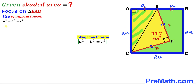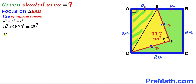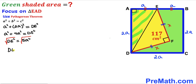Filling in the Pythagorean formula: a squared plus (2a) squared equals DE squared. Simplifying: a squared plus 4a squared equals DE squared, so DE squared equals 5a squared. Taking the square root of both sides, DE equals a times the square root of 5.